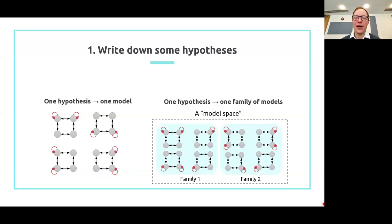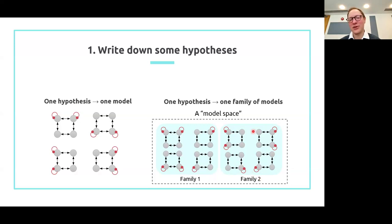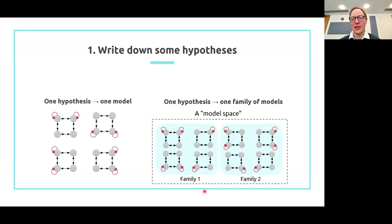The other thing you can do is have one hypothesis correspond to a family of models. A family is just a group, and here we've got two families of models where all the models in one family share some common feature. For example, one family of models might have all your dorsal top-down connections, and family two contains models where there are ventral-to-dorsal connections. So rather than one model equalling one hypothesis, you've now got a whole group of models corresponding to one hypothesis — that's called a family.